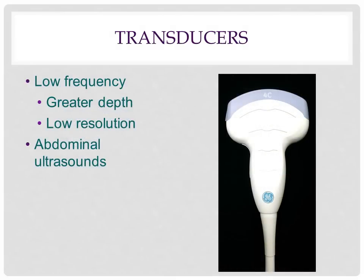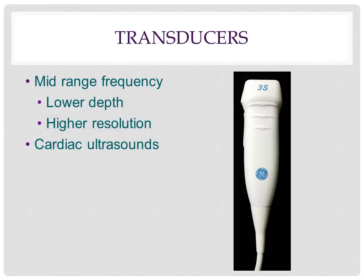A low frequency probe, such as the 4C curvilinear probe, will be used during abdominal ultrasound scans. It has a low frequency, which allows for greater depth but a lower resolution. It also has a wide footprint, allowing it to scan larger areas of the abdomen. In contrast, the 3S transducer probe has a higher frequency range. This produces higher resolution images, but means sound waves do not travel deep into the body. With a small footprint, the probe can send sound waves between ribs, making it the optimal probe for cardiac ultrasounds.